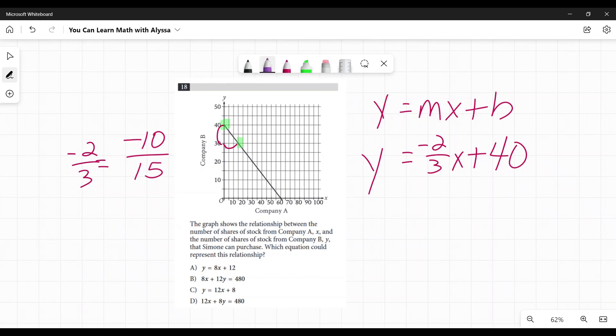First things first, I'm looking over here and we've got two of them where the x's and y's are on the same side, and two of them where the y's are by themselves. Now I already have the y by itself: negative 2/3x plus 40. That does not match either of these two, so they are out. Both of the other ones have the x's and y's on the same side, and I'm going to try to get to those numbers.